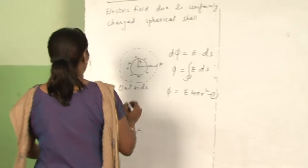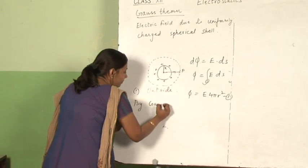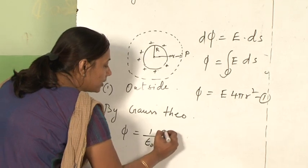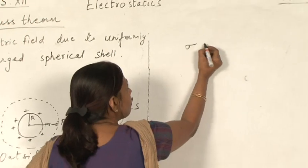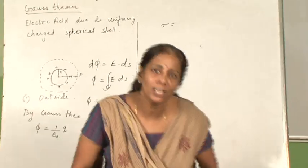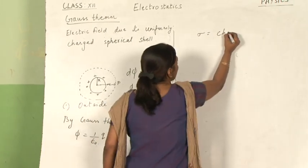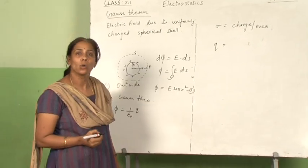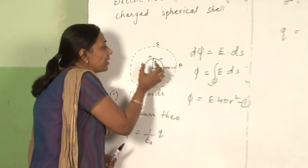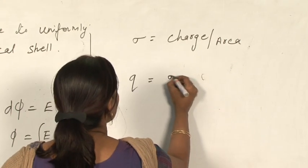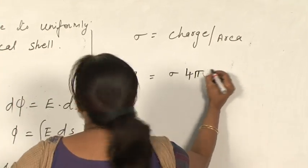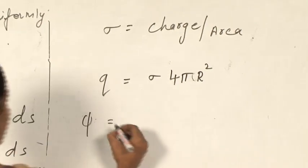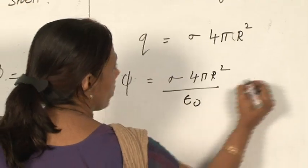Now applying Gauss theorem: flux = (1/ε₀) × total charge enclosed. Since σ is the charge per unit area and it is a shell of radius R, the total charge Q = σ·4πR². So by Gauss theorem, flux = σ·4πR²/ε₀. This is equation 2.